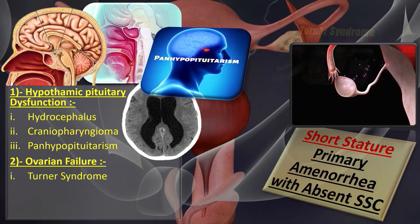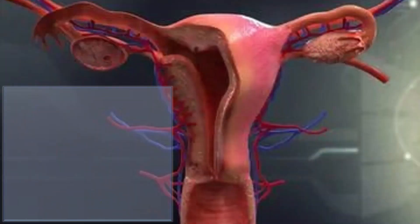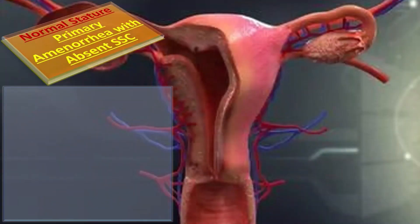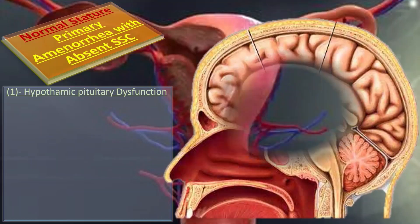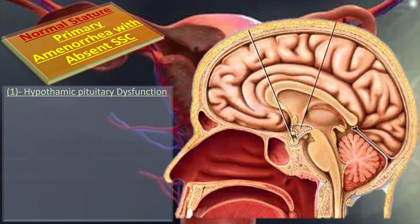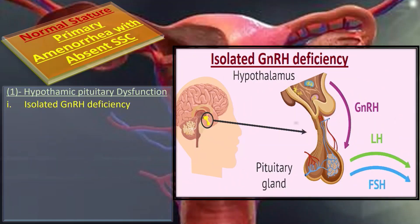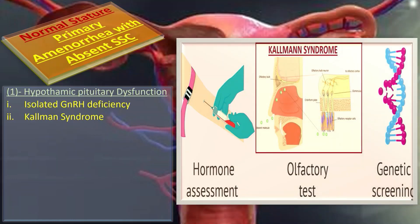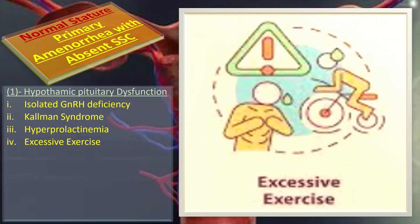Coming to normal stature with absent secondary sexual characteristics, we have two main divisions. First is hypothalamic pituitary dysfunction, which is hypogonadotrophic hypogonadism, and that includes isolated GnRH deficiency. Second is Kallmann syndrome, hyperprolactinemia, excessive exercise, weight loss, or anorexia nervosa.